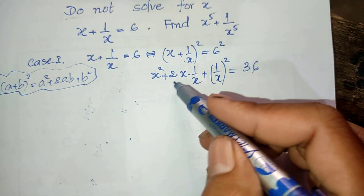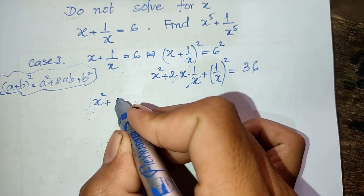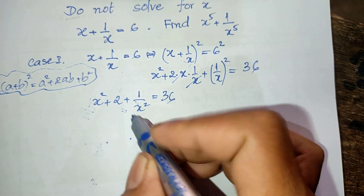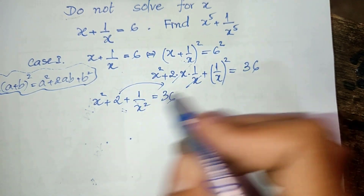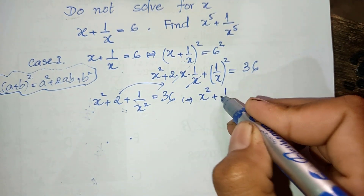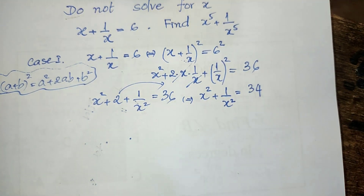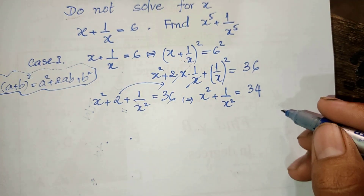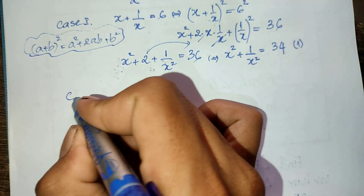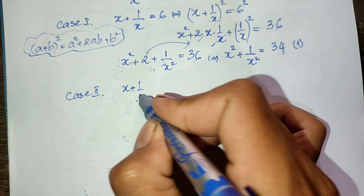We simplify it: h squared plus 2 plus one divided by h squared equals 36. Then I move 2 from the left-hand side to the right-hand side and get h squared plus one divided by h squared equals 34. Okay, let this be the first equation.